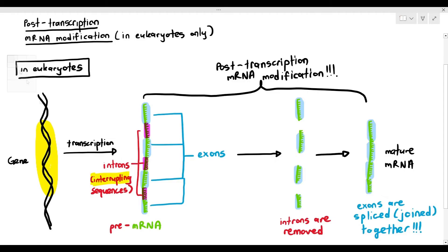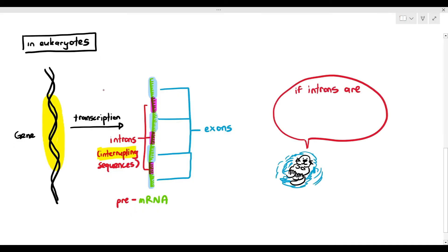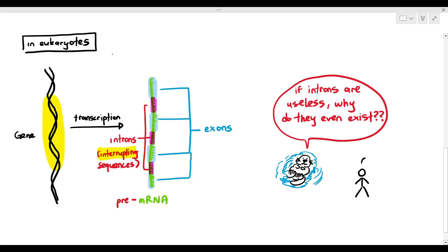Now, if introns are interrupting sequences — basically useless — why do they even exist? You might be thinking: why do eukaryotes have to go through these extra confusing steps? Prokaryotes don't need to do this, but eukaryotes do. Why do mRNAs have useless sequences? There are a few possible explanations for this, and we are going to look at one possible explanation as to why introns, which we deem as useless, exist.